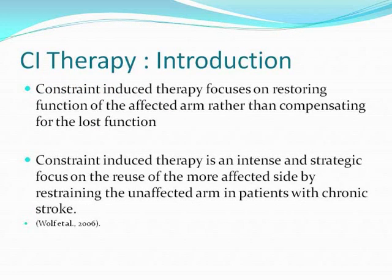Constraint-induced therapy differs from most other rehab techniques by focusing on restoring function of the affected arm rather than compensating for the lost function. It is an intense and strategic focus on the reuse of the more affected side by restraining the unaffected arm in patients with chronic stroke.